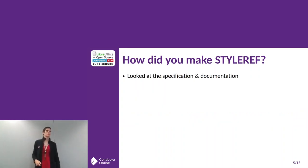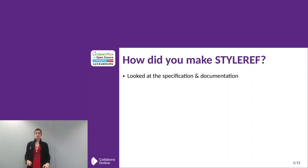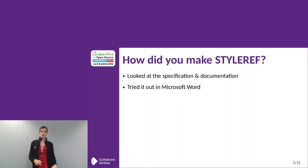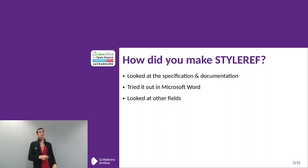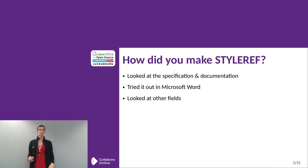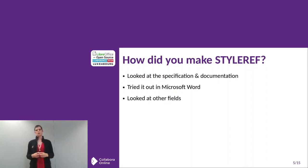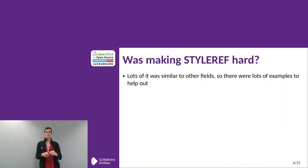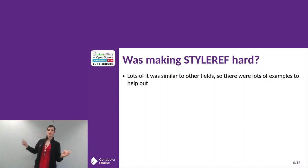To make StarRef, I looked at the specification and the documentation for OOXML and Word. I also tried it out because there are some edges where the documentation didn't give me a full picture of what the StarRef field does. I also looked at other fields in LibreOffice and how we implemented them. Particularly useful were the page number field, which changes depending on which page you're on, and also the other cross-reference fields, which have ways of referencing, for example, a bookmark that's on a separate page. So lots of making StarRef was similar to other fields, so there were a lot of examples to help out.